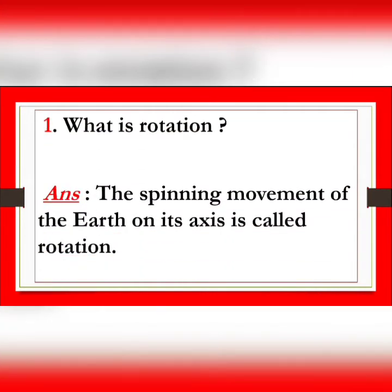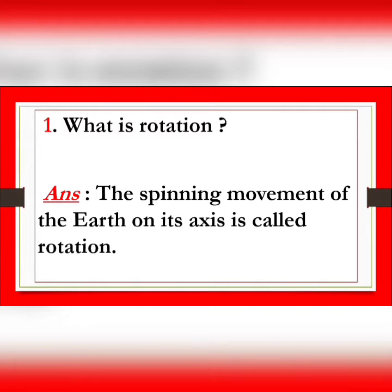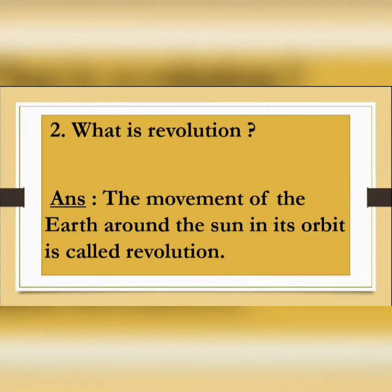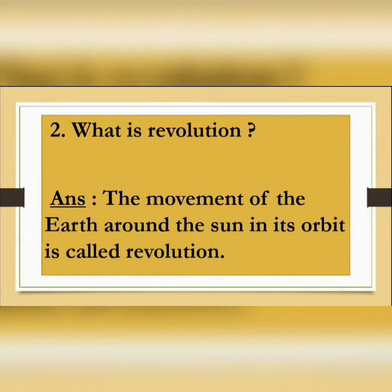Starting with question number D1: What is rotation? Answer: The spinning movement of the Earth on its axis is called rotation. Next, question number D2: What is revolution? Answer: The movement of the Earth around the sun in its orbit is called revolution.